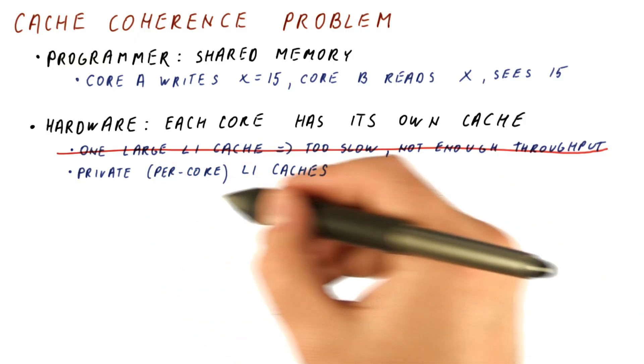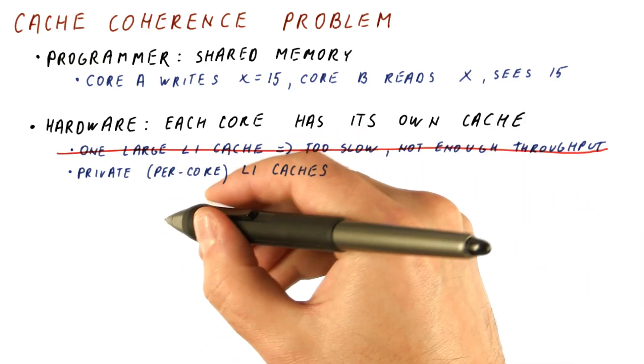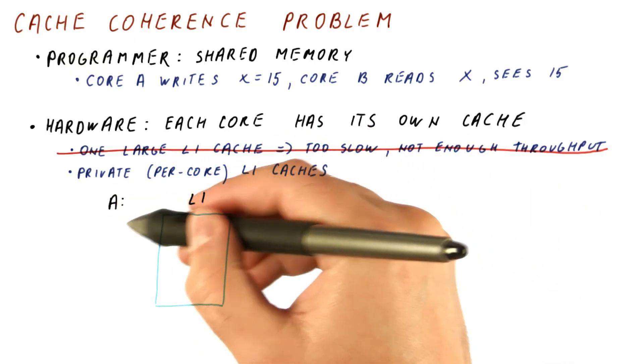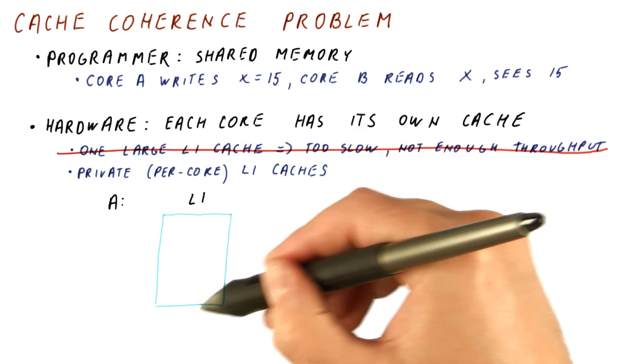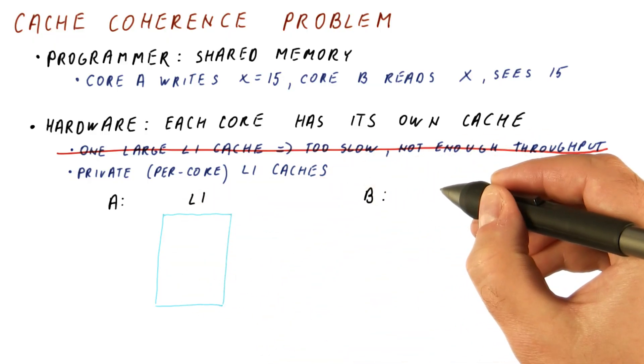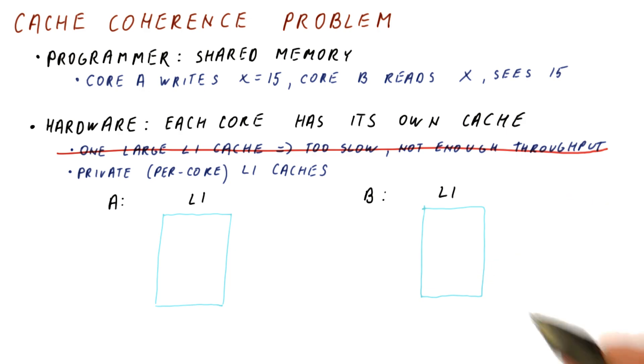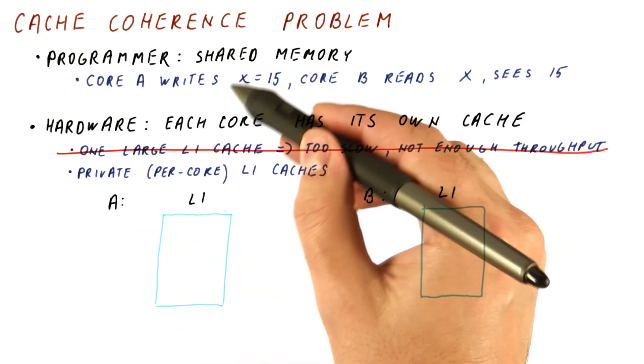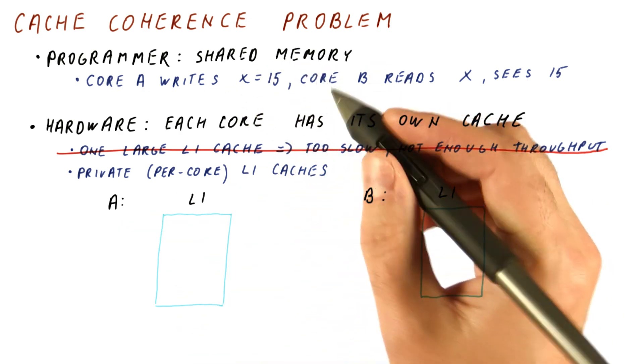However, once you have these private caches, here is what can happen. This is the core A with the level one cache for core A. This is core B, and it has its own level one cache. So we said that, let's say, core A writes x equals 15.